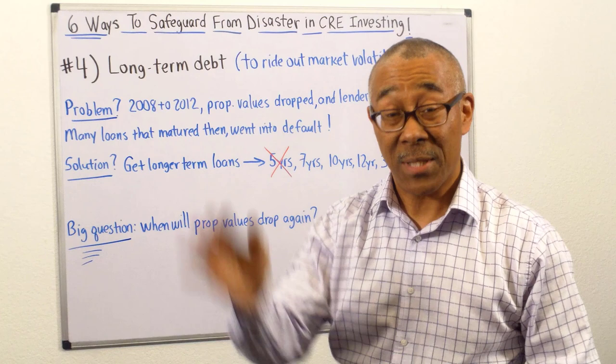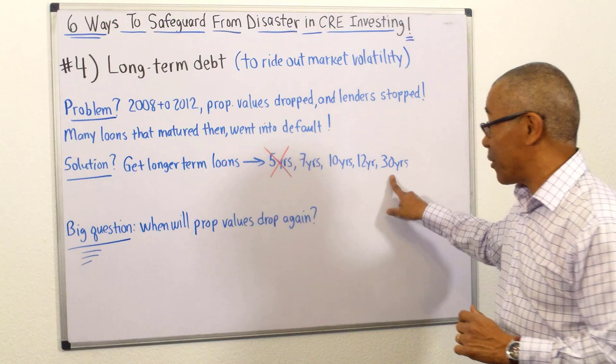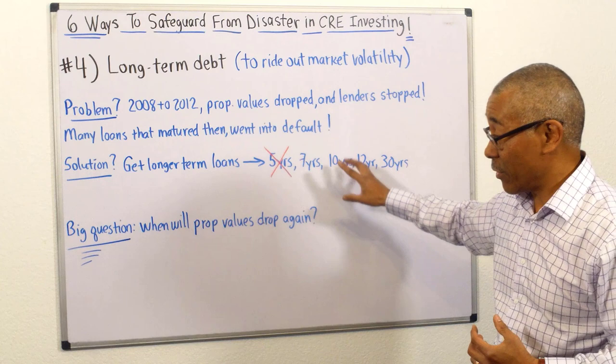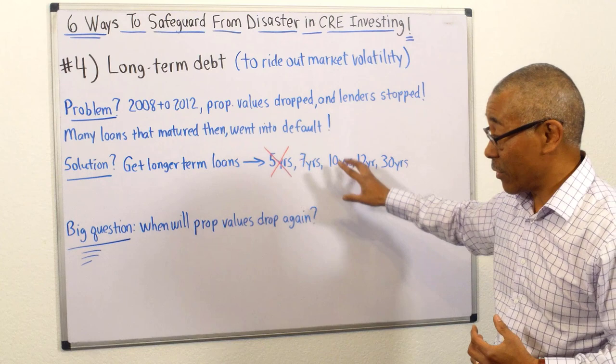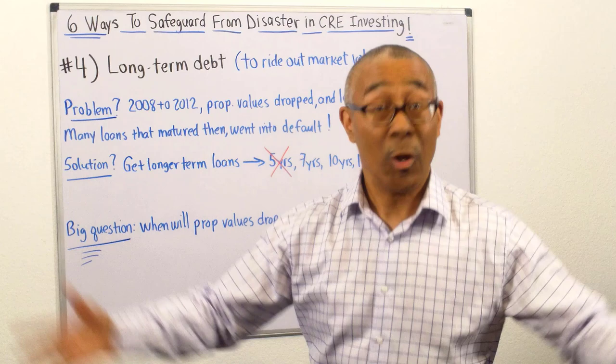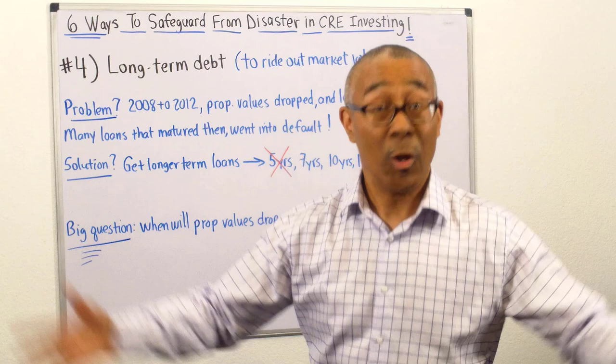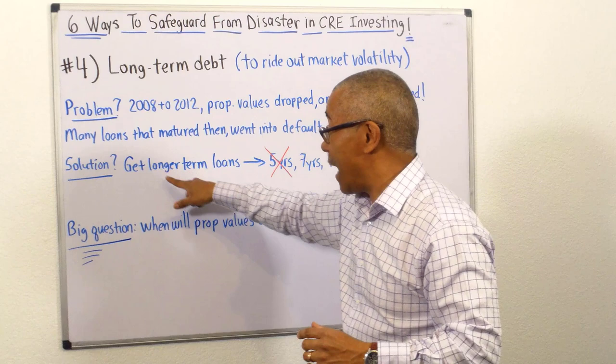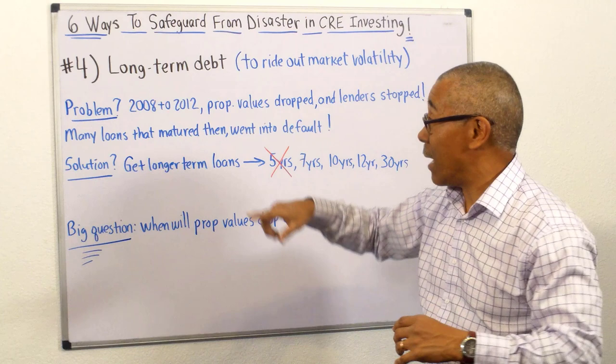A long-term loan is not five years — it could be seven, 10, 12, or even a 30-year fixed commercial loan, which is available. The interest rates are higher, but the most common long-term options are seven, 10, and 12 years. The big question is: when will property values drop again? No one knows — not even the smartest people in the world. So to safeguard from loan default caused by inability to refinance during a market drop, get long-term debt long enough to ride out market volatility.